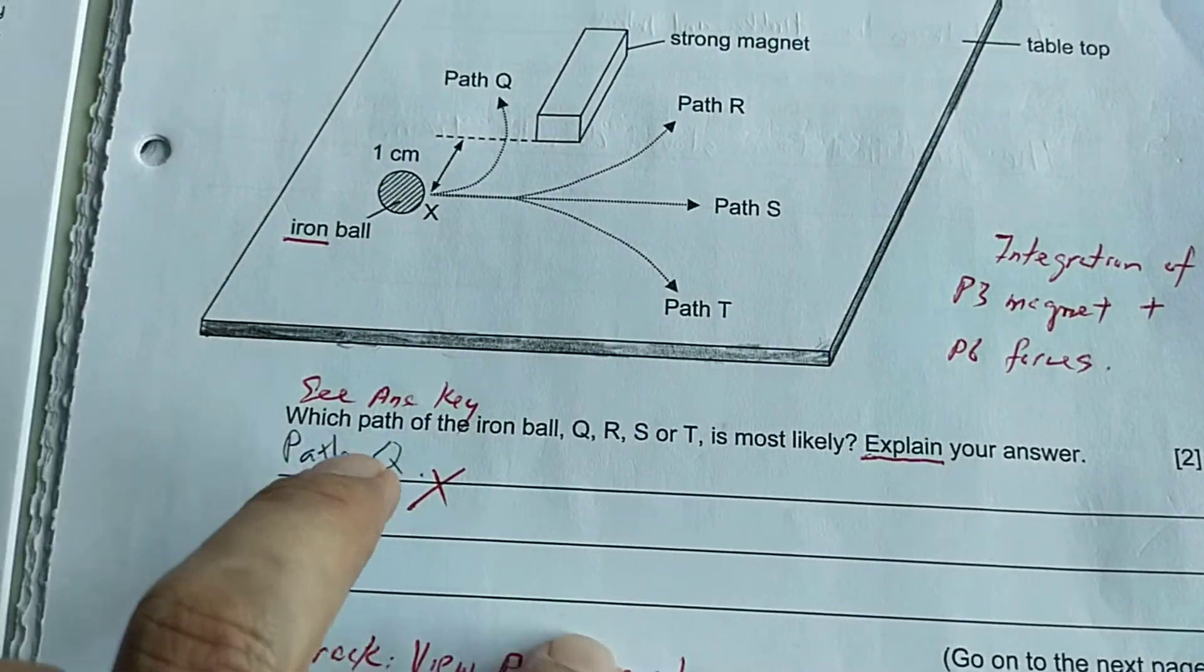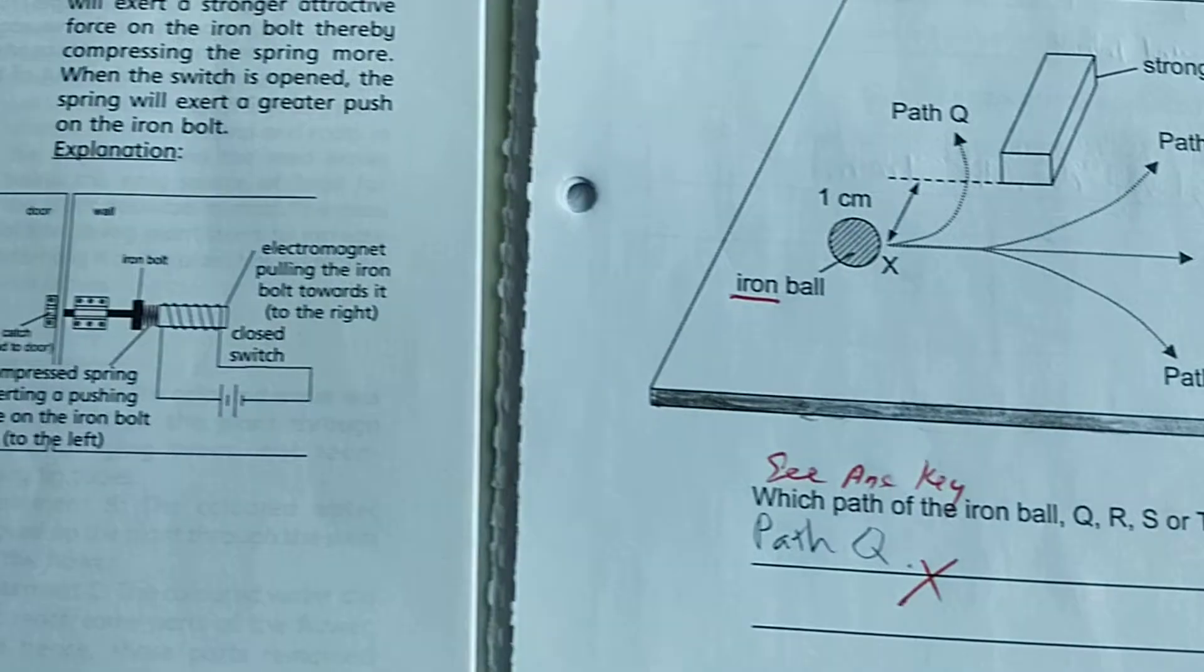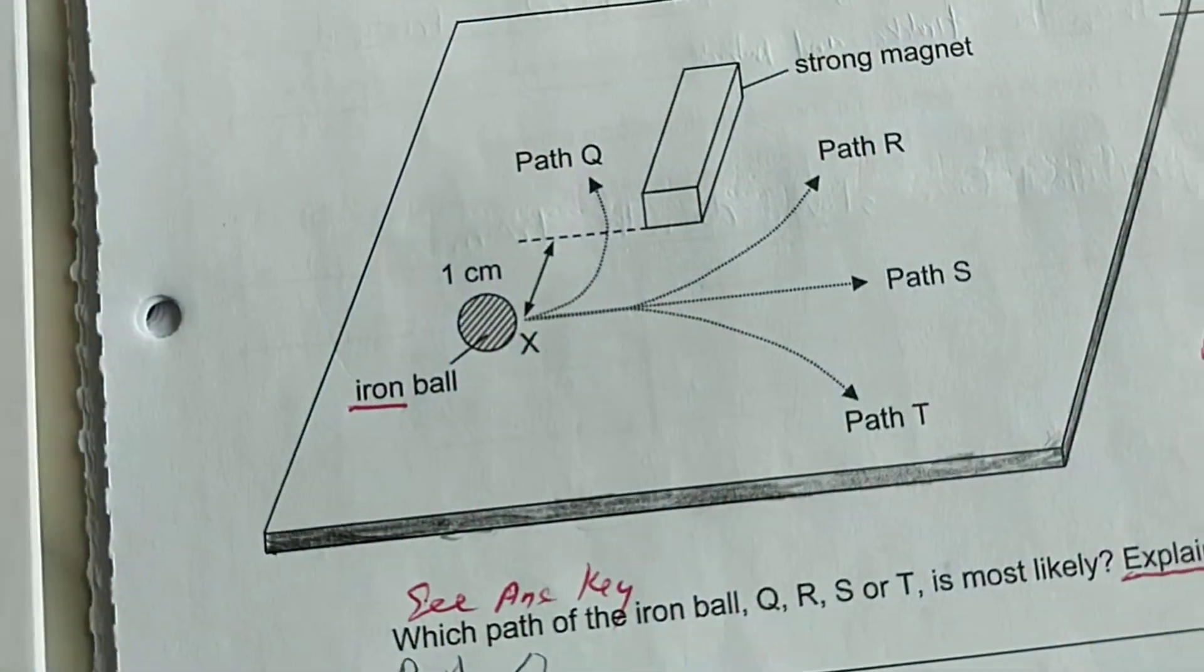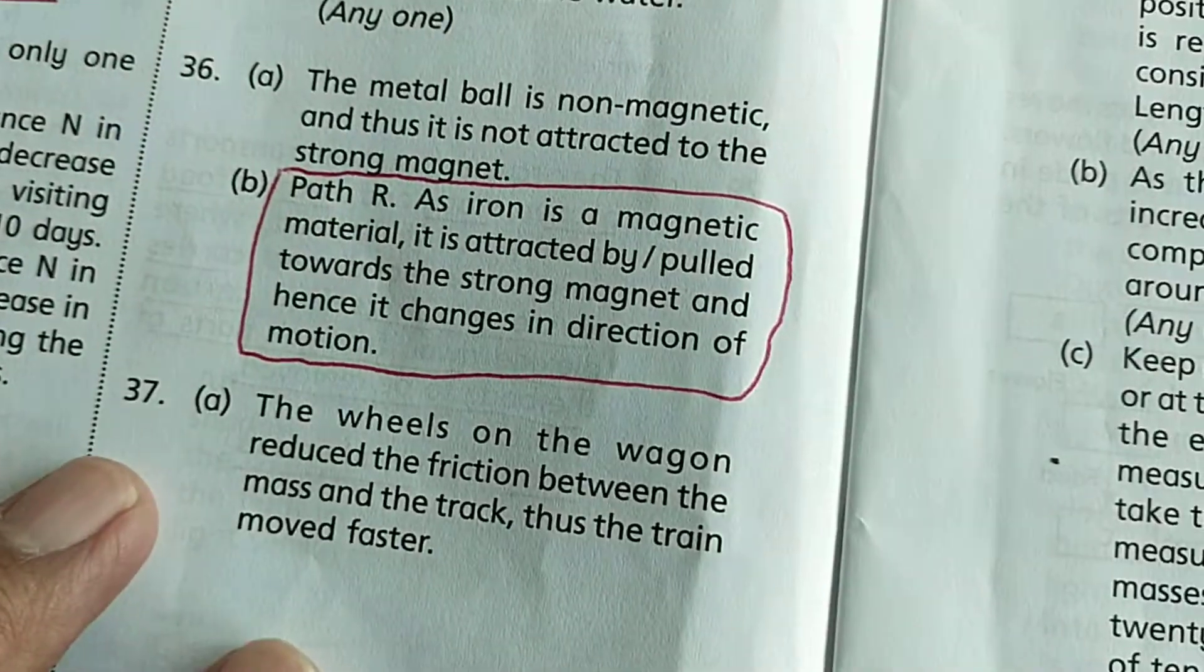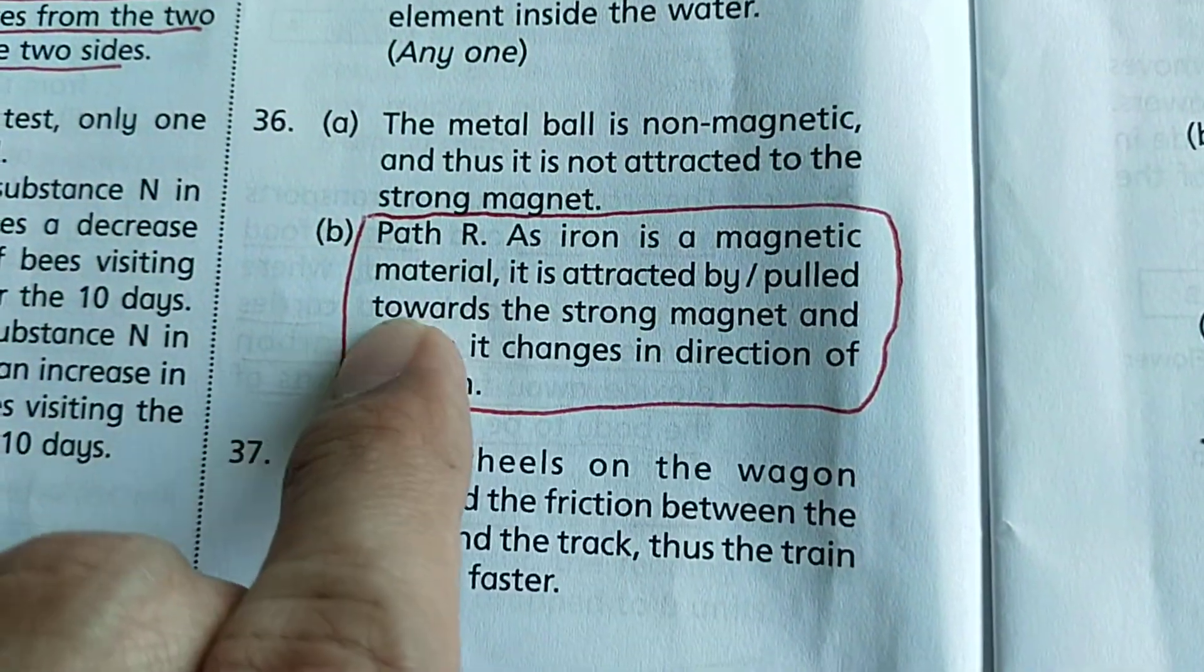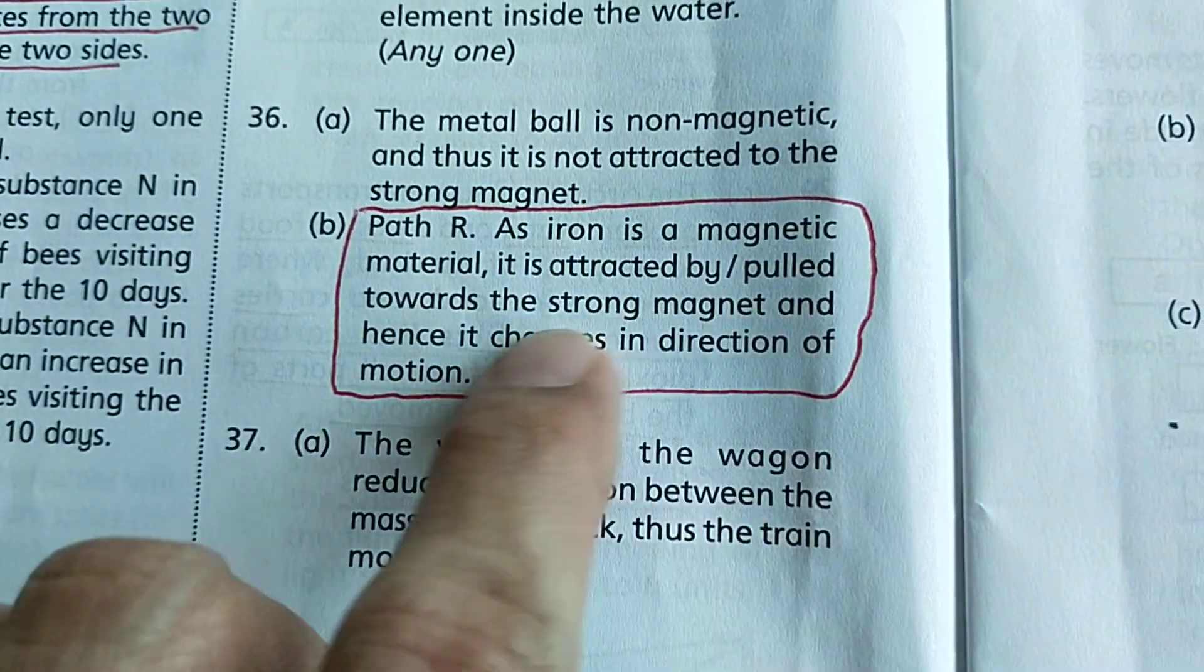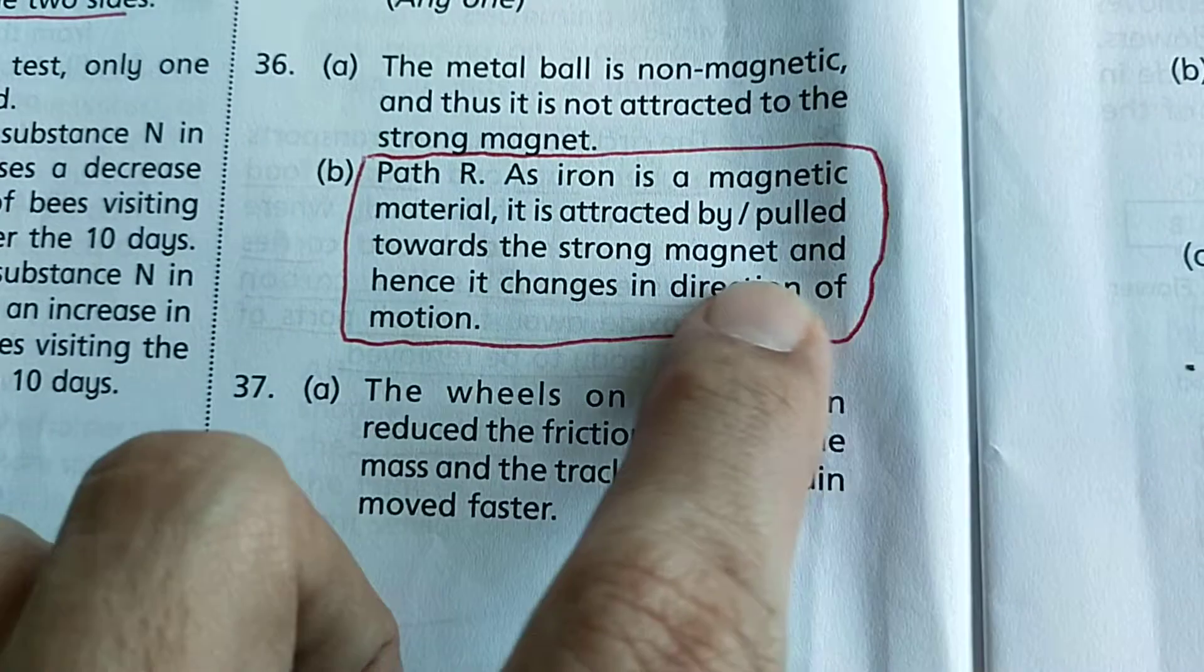So coming back, the answer for these questions - let me explain to you the answer for these questions. It should be path R. Path R, as iron is a magnetic material, it is attracted by the strong magnet or is pulled towards a strong magnet.